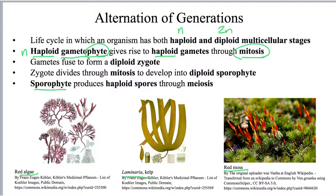Haploid gametes — sperm cells and egg cells — are going to fuse to form a diploid zygote, just like in animal reproduction. The zygote then divides through mitosis to develop into the sporophyte, which is a diploid structure. Once the diploid sporophyte has matured, it's going to produce haploid spores. In order to produce haploid spores from a diploid sporophyte, the sporophyte undergoes meiosis — reductional cell division — to contain half of the genetic material of the parent cell.